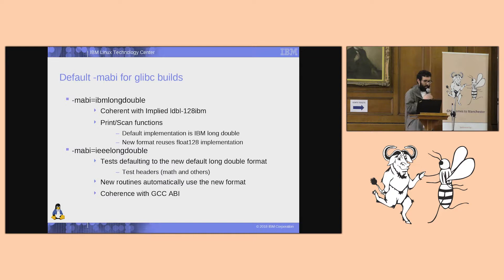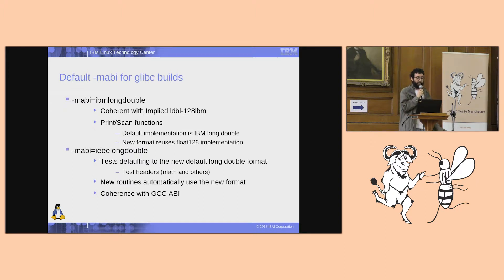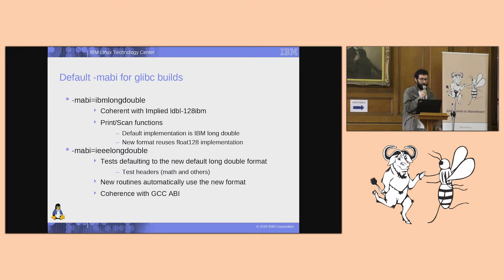What I mentioned about the MABI before: by default, current Glibc code is compiled with -mabi=ibmlongdouble. If we keep doing this, it has the advantage that it's coherent with the fact that we are implying LDBL-128-IBM in all three architectures, and it's also good because all the printf and scanf functions are built having in mind that long double has the IBM long double format.